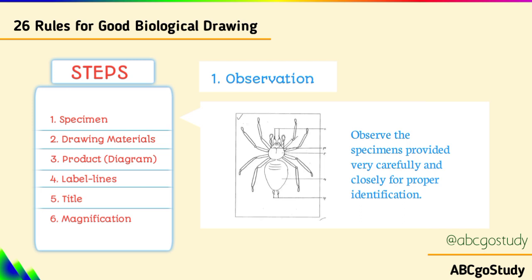Starting from number one, the specimen — you have to observe it. Observe the specimen provided very carefully and very closely for proper identification. You could need a hand lens; your school will provide this so you can see small specimens and draw them clearly.